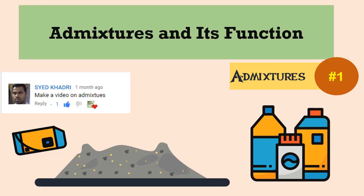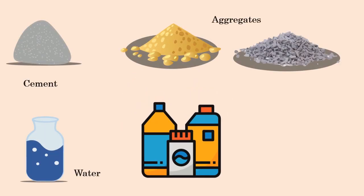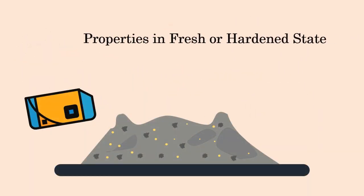Admixtures and its function. Admixture is defined as a material other than concrete ingredients like cement, water and aggregates, which is mixed with the concrete to improve certain of its properties in fresh or hardened state.